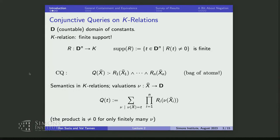There is a way to define semantics directly for conjunctive queries. Consider a valuation — a function from the variables in the query to D. The value in the semiring is a sum of products. This sum is actually finite because the product is non-zero for only finitely many assignments.